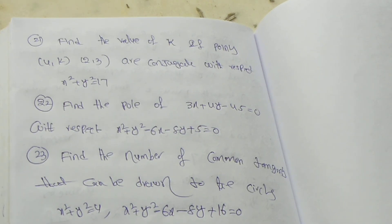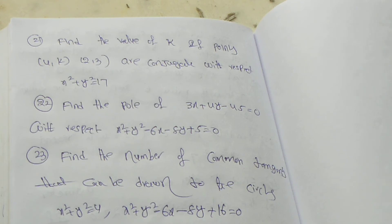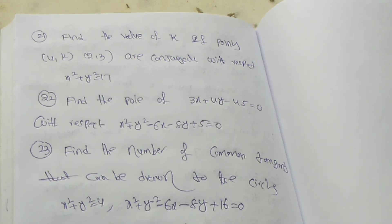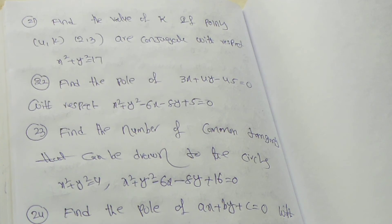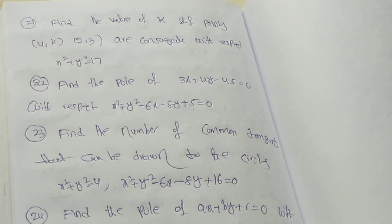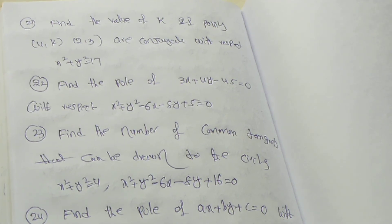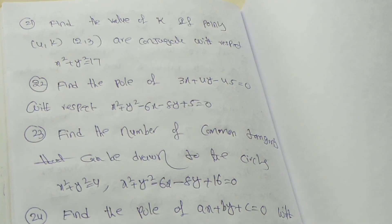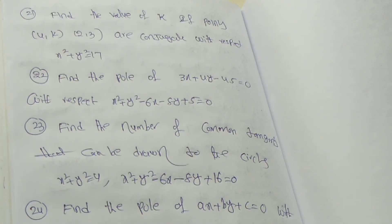Twenty-first question: Find the value of k if the points (4, k) and (2, 3) are conjugate with respect to 2x square plus y square equal to 17. Twenty-second question: Find the pole of 3x plus 4y minus 45 equal to 0 with respect to x square plus y square minus 6x minus 8y plus 5 equal to 0.